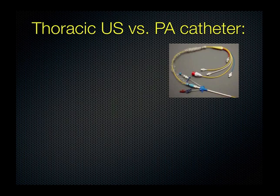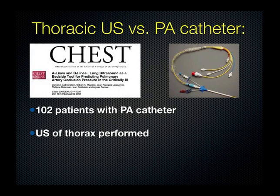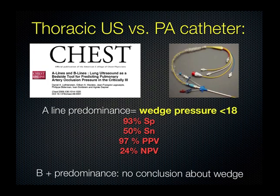Regarding the utility of PA catheters compared to ultrasound: a CHEST article recently looked at A lines and B lines to see what they could tell us about pulmonary capillary wedge pressure in 102 patients who had a PA catheter and underwent thoracic ultrasound. The finding was that A line predominance meant the wedge pressure was always less than 18. However, B line predominance did not allow you to make a conclusion about the wedge because cardiogenic and non-cardiogenic pulmonary edema can often appear similar.